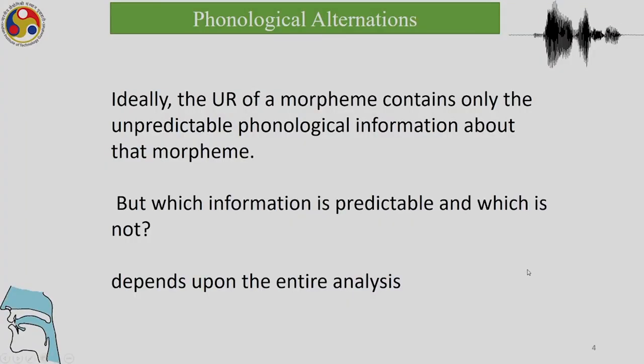So, as we have discussed before, the underlying representation of a morpheme contains only the unpredictable morphological information about that morpheme. The information is unpredictable, but how do we know which information is predictable and which is not? The answer is entirely in the analysis, and we will see in more detail today how we can proceed with that analysis.